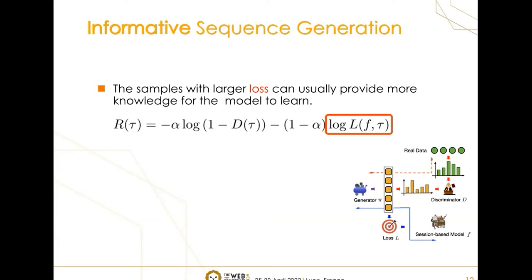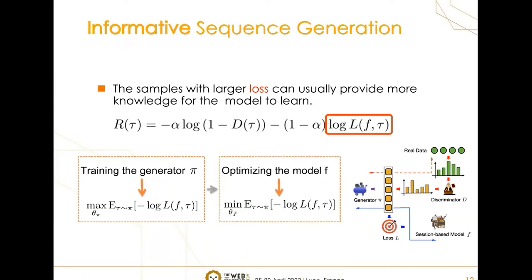Motivated by this phenomenon, we also use the loss of the target session-based recommender model as the reward. Combining it with the original reward, we get a new reward to guide the sequence generation. So, we can generate both reasonable and informative samples. Actually, when training the generator pi, the sample loss is maximized to produce informative data. And then, when training the model F with augmented dataset, the sample loss will be further minimized, which forms another adversarial training process.